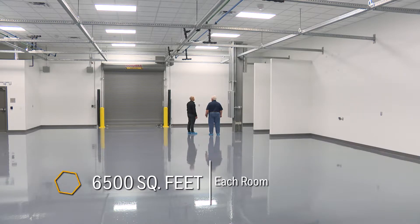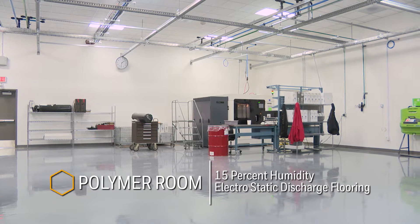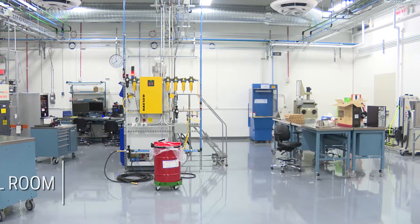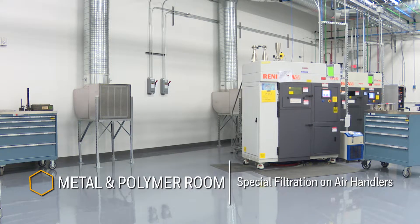Two spaces are about 6,500 square feet each. The polymer room has 15% humidity and special ESD floors, whereas the metal room has ESD floors. Both rooms have special filtration on the air handlers.